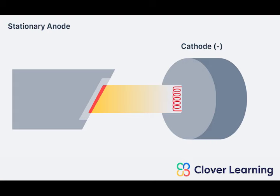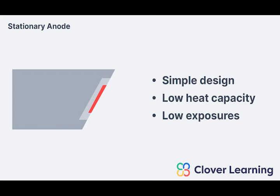So what does that tell us about stationary anodes? The design is very simple, which is good. However, these anodes have very low heat capacity, which also means we can only use them for very low exposures. This just doesn't work for general radiography. So outside of dental x-ray machines, stationary anodes are not common in medical radiography.